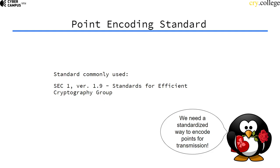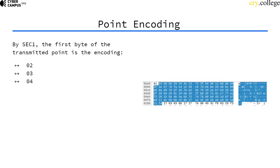There's a relatively straightforward standard for that. Usually the first byte of the transmitted point shows what encoding is used. The first byte will either have the value 2, 3, or 4.